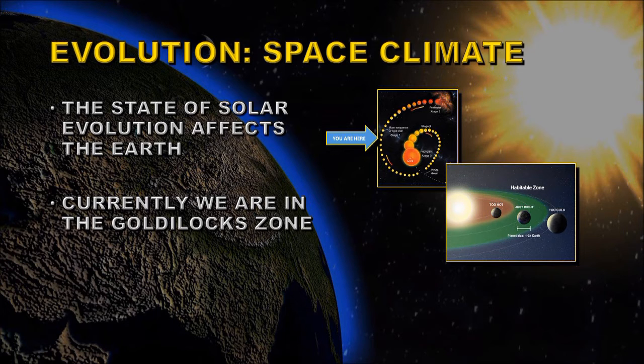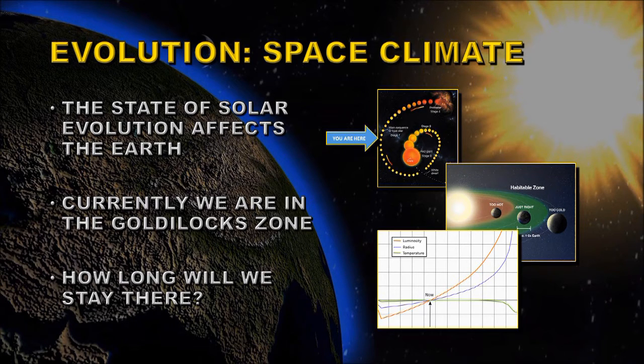Or too far away, it'll be too cold for life to exist, like Mars. As the Sun evolves, it's warming up, and so the Goldilocks Zone will be moving further away and eventually the Earth will no longer be within that zone. So how long will we remain in the Goldilocks Zone?